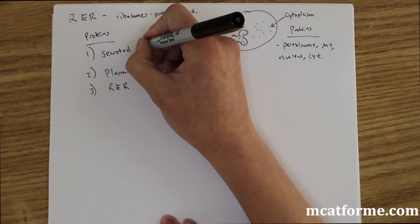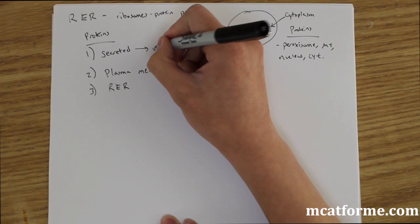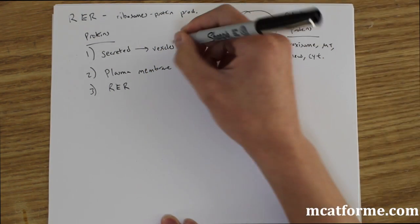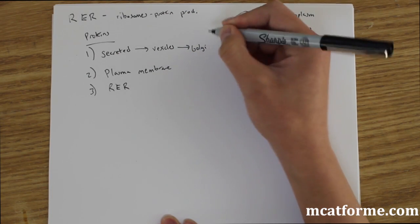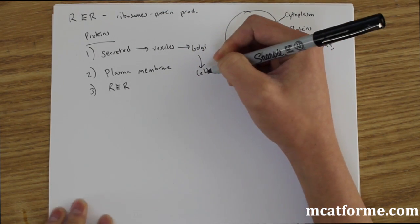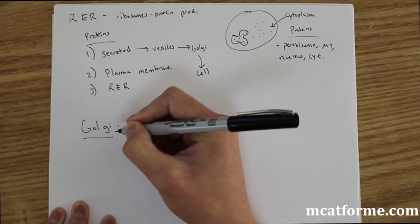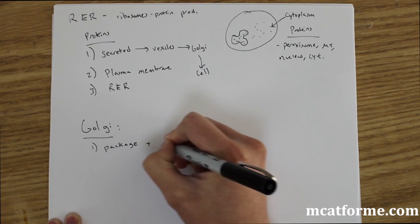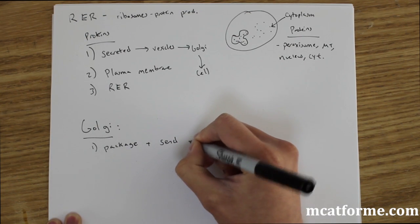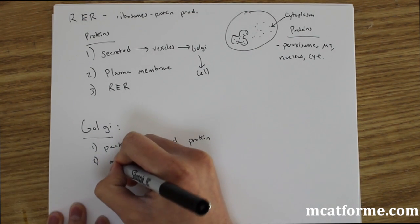One thing that I need to mention is that these secreted proteins get put in these vesicles that are made of the membrane. And then they get packaged off in the Golgi before they get secreted out of the cell. So I think that's a perfect time for us to transition into the Golgi apparatus. The Golgi apparatus functions are to package and send off these proteins that are made from these ribosomes in the rough ER, and also modification of these proteins.